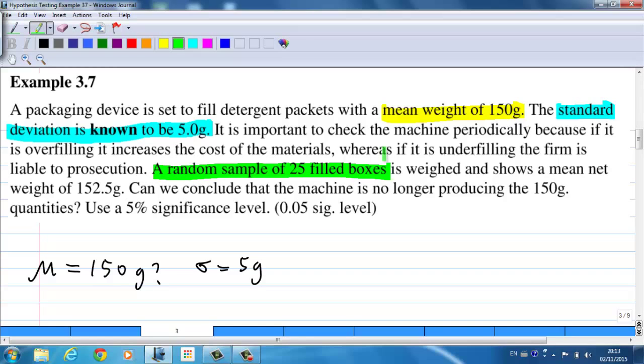A random sample of 25 fill boxes is weighed. So n, the sample size, is 25. And it shows that the mean of this sample is equal to 152.5 grams. And that is the sample mean x-bar.